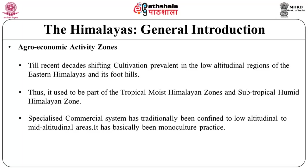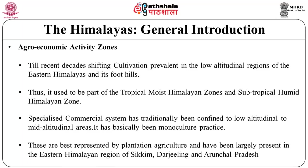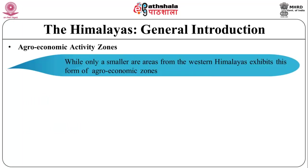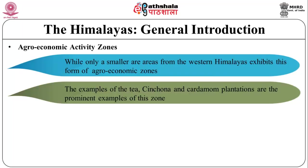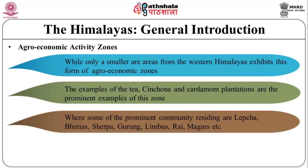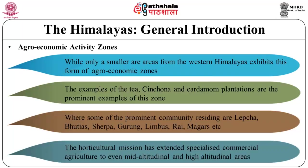The specialized commercial system has traditionally been confined to low to mid-altitude areas and is basically a monoculture practice. It is best represented by plantation agriculture and has been largely present in the eastern Himalayan region of Sikkim, Darjeeling, and Arunachal Pradesh, with smaller areas in the western Himalayas also exhibiting this form. Tea, cinchona, and cardamom plantations are prominent examples of this zone, where prominent communities residing include Lepchas, Bhutias, Sherpas, Gurungs, Limbas, Rais, and Magars.